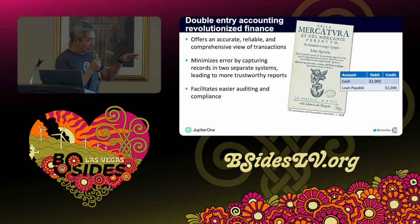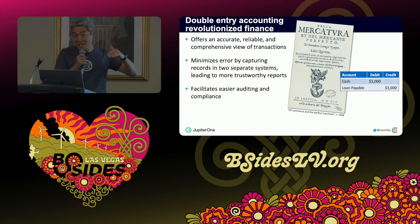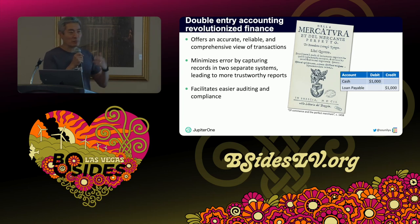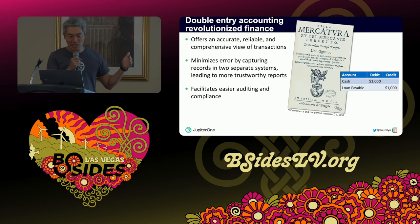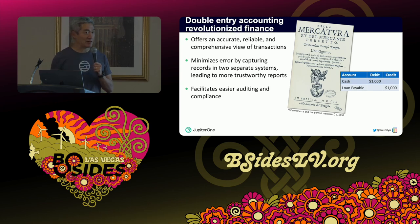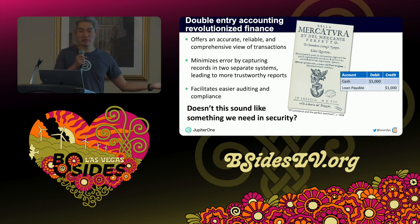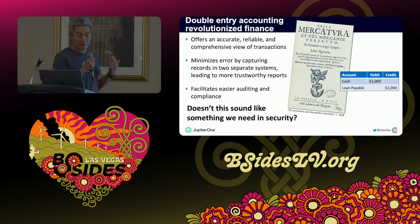For some history, back in 1458, the Medicis — or anyway, some Italian guys — figured out how to do double entry accounting. Before that, it was single entry accounting. The basic idea is you have two ledgers: a cash ledger and a different ledger, and they are supposed to balance out. It offers an accurate and reliable, comprehensive view of transactions, minimizes errors, leads to more trustworthy reporting, and facilitates easier compliance and auditing. Sound familiar? Sounds like something we want in security.